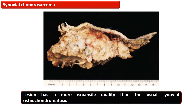Synovial chondrosarcoma is a rare entity that closely resembles synovial chondromatosis grossly and radiologically. Obvious histological features of malignancy are seen on biopsy, and morphologically this lesion has a more expansive quality than usual synovial chondromatosis.